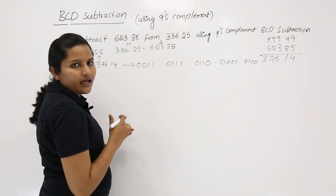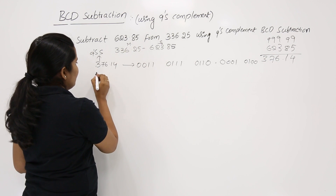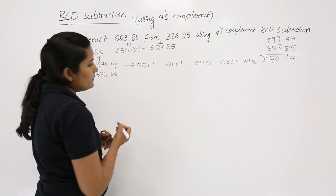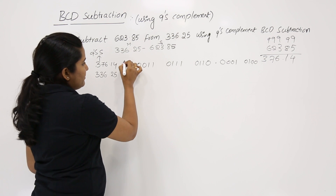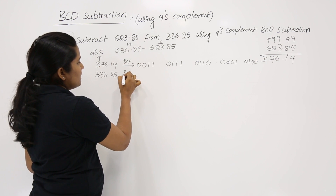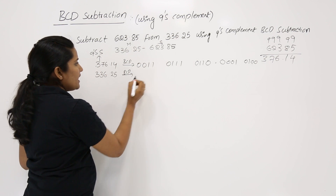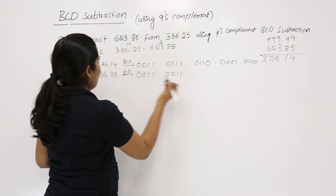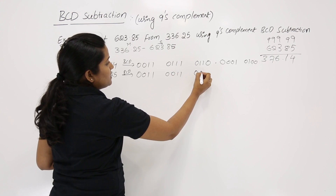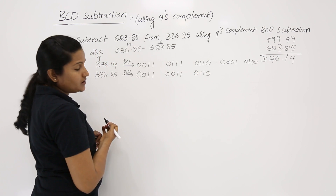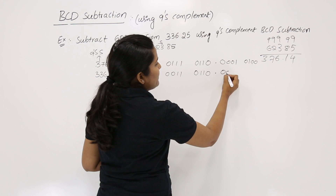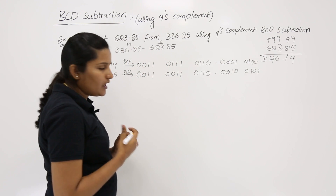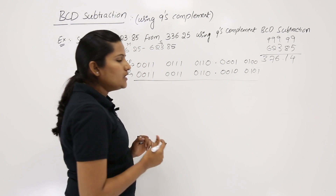After completing the 9's complement of the subtrahend, we take the BCD code for the minuend 336.25: for 3: 0011; for 3: 0011; for 6: 0110; for 2: 0010; for 5: 0101. If you have any doubt, use 8421 as a reference.